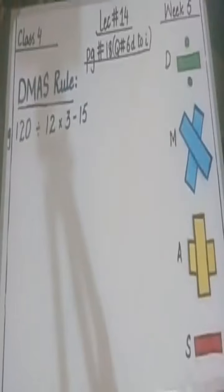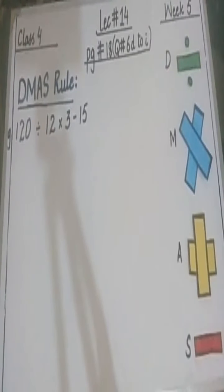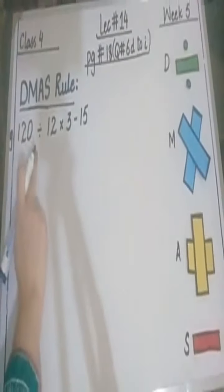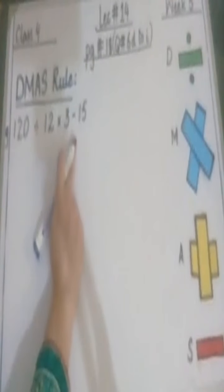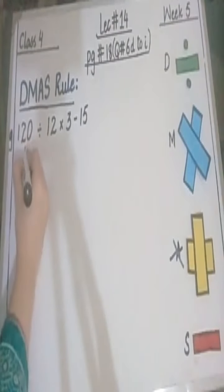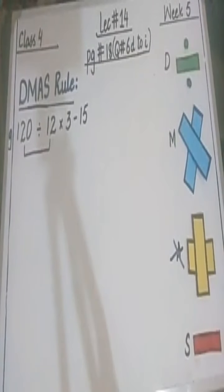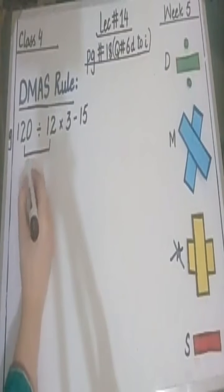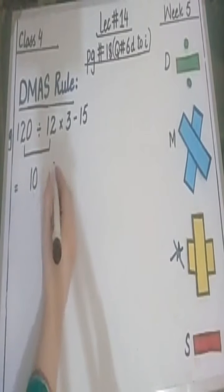Again class, we have to solve division first. Here we have division sign, multiplication sign, and subtraction sign. There is no addition sign. Now we will solve division first: 120 divided by 12. As you all know, 12 times 10 is 120, so 120 divided by 12 is 10. The other values will be written as is.